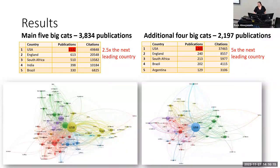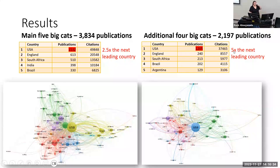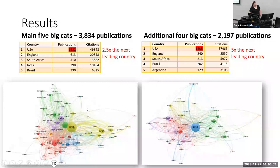I analyzed a total of 6,031 scientific articles. My findings demonstrated that the U.S. is a top publisher for both the main five — 2.5 times the citations of the next leading country — and the additional four, where the U.S. had five times the citations of the next leading country. Looking at the visuals, the main five's most prolific countries are their own nodes, showing co-authoring outside the top five producers.